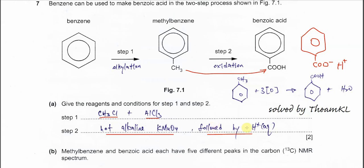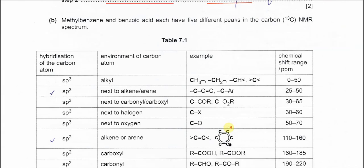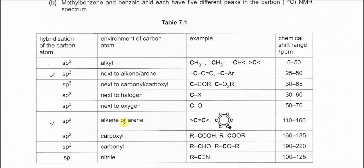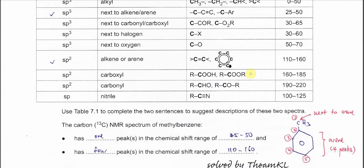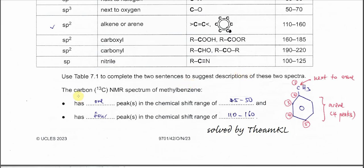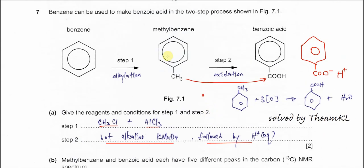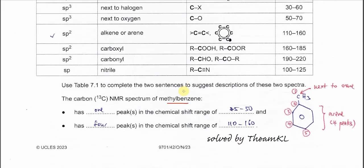Step two is normally followed by acid addition. Part B is the carbon NMR, and table 7.1 gives information about hybridization, environment of carbon atoms, examples, and chemical shift. We just need to use two or three pieces of information from this table. The question asks us to complete two sentences describing the carbon NMR spectra of methylbenzene.